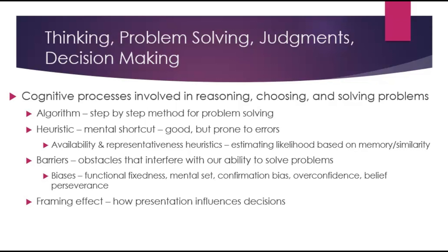For example, you forget your friend's Wi-Fi password and you guess based on passwords they've had before — it's quicker than trying every possible combination; it may work, it may not. Availability heuristic is how we judge something based on how easily we can remember examples, like thinking plane crashes are common after seeing them on the news. Representative heuristic is how we judge something that matches a prototype or stereotype, such as assuming someone who likes books and wears glasses must be a librarian, even if that's statistically unlikely.